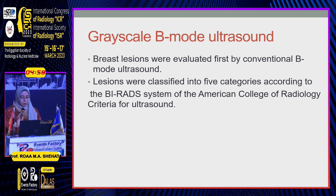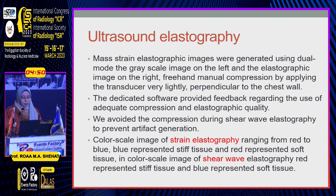Breast lesions were evaluated first by conventional B-mode ultrasonography and classified according to the PIRADS scoring system for ultrasound. For ultrasound elastography, a mass elastographic image was generated using a dual-mode grayscale image on the left side and the elastographic image on the right. Free-handed manual compression was applied by placing the transducer lightly perpendicular to the chest wall. Dedicated software provides feedback about adequate compression and elastographic quality.